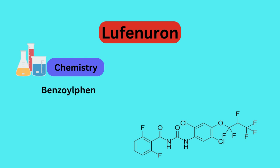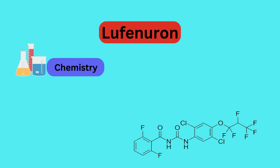Lufenuron is a benzyl phenylurea compound used as an insect growth regulator. Its chemical structure includes a urea linkage and a benzyl group.